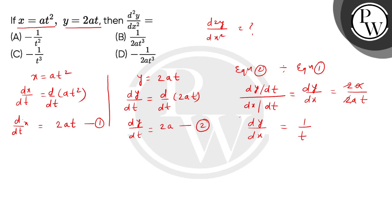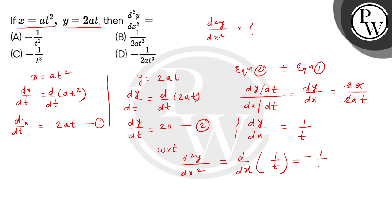अब इसी function को हम फिर से differentiate करेंगे, but with respect to x. So this is d squared y divided by dx squared, this is equals to d/dx of 1 by t. तो बच्चों यहां से हमें मिलेगा, power rule से पहले: minus 1 by t square, then multiplied by d/dx of t. अब बच्चों हम देख सकते हैं कि equation number 1 से हमें d/dx of t की value क्या मिल जाएगी: that will be 1 by 2at.